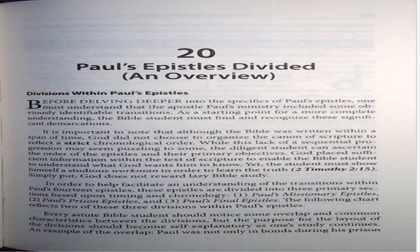The diligent student can ascertain the order of the epistles and their primary objectives. God placed sufficient information within the text of Scripture to enable the Bible student to understand what God wants him to know. Yet the student must show himself a studious workman in order to learn the truth — 2 Timothy 2:15. Simply put, God does not reward lazy Bible study. In order to help facilitate an understanding of the transitions within Paul's 14 epistles, these epistles are divided into three primary sections based upon timing and chronology.